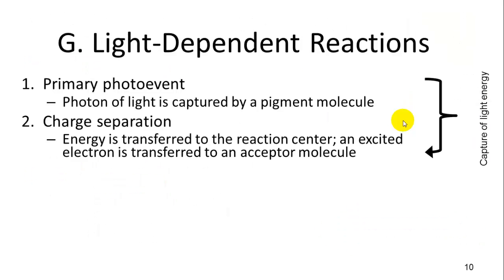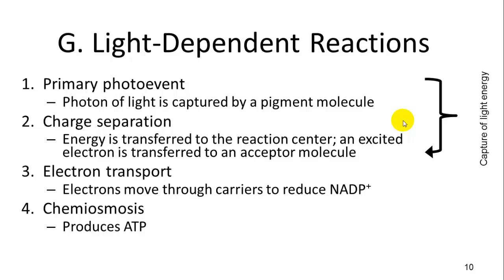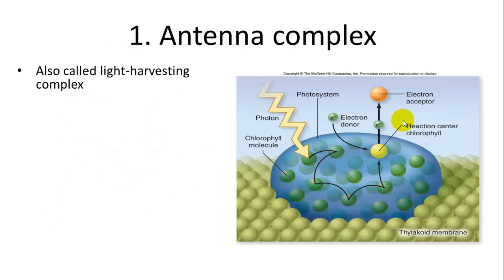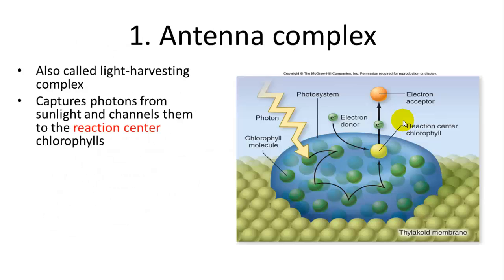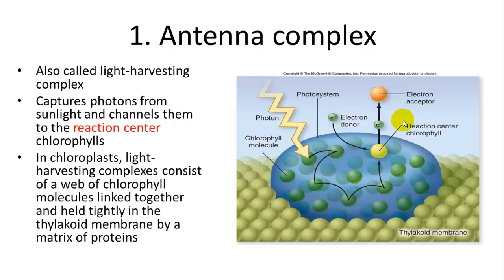The light-dependent reaction has four parts: the primary photo event, charge separation, electron transport, and chemiosmosis. The antenna complex is also called the light-harvesting complex because it captures photons and channels them to the reaction center of chlorophyll a.